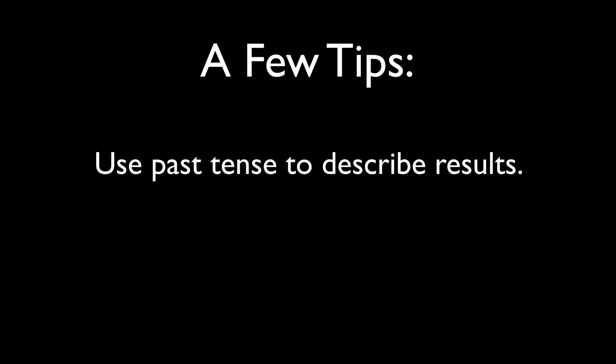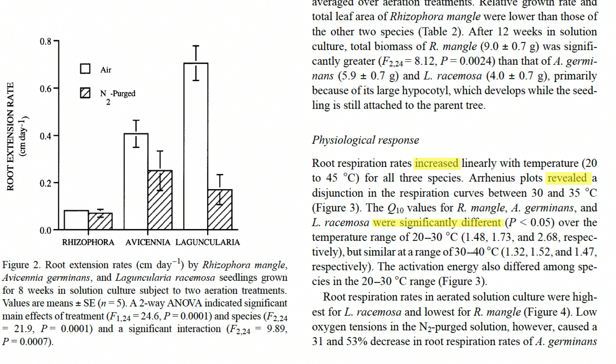And finally, you will use past tense to describe your results. Root respiration rates increased linearly. Arrhenius plots revealed. Q10 values were significantly different. There may be instances when you use present tense to state a known fact, such as in this sentence, which explains that the hypocotyl, or embryonic stem, develops while still attached to the parent tree. But generally, you will use past tense.